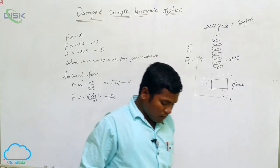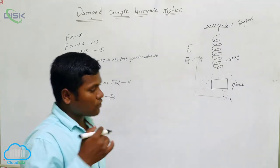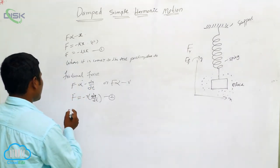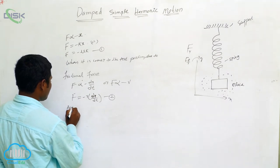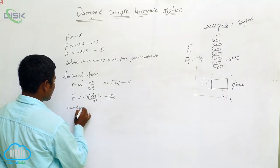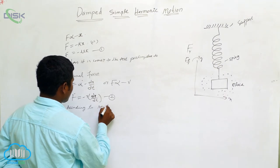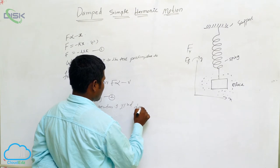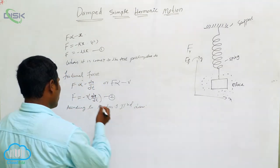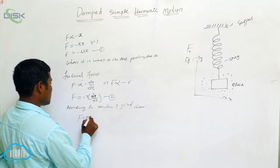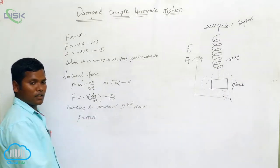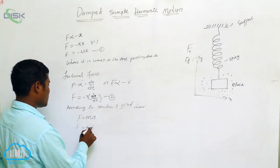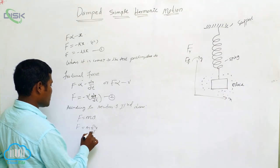According to Newton's second law of motion, the force is given by F = ma. In calculus notation, we write F = m(d²x/dt²). This is equation 3.